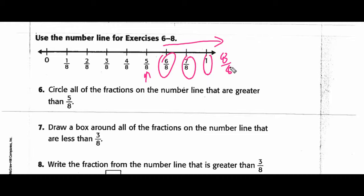It says, draw a box around all the fractions that are on the line that are less than three-eighths. Here's three-eighths. Anything to the left is less than three-eighths. And it says for you to draw a box around them, around each one of them.